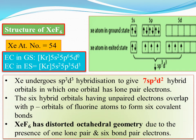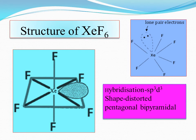Structure of XeF6: sp3d3 hybridization using 1 s, 3 p, and 3 d orbitals gives 7 sp3d3 hybrid orbitals. Six bond pairs form sigma bonds with the p-orbitals of six fluorine atoms; one lone pair of electrons remains. According to VSEPR theory, the lone pair distorts the geometry, so the expected pentagonal bipyramidal shape becomes a distorted pentagonal bipyramidal structure.